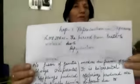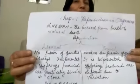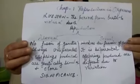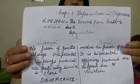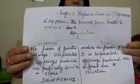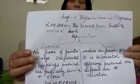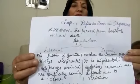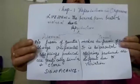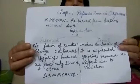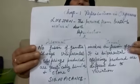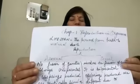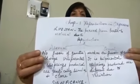Sexual reproduction involves the fusion of gametes. Asexual reproduction is uniparental, meaning it involves only one parent, whereas sexual reproduction is biparental.